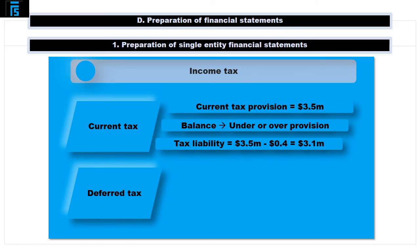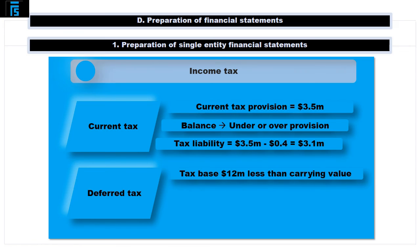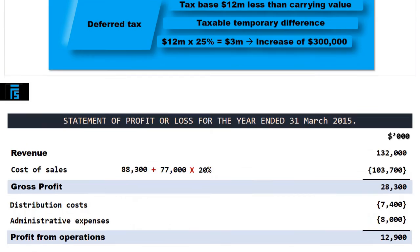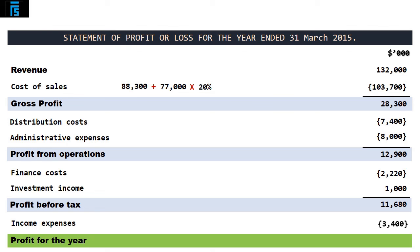Moving on to the deferred tax component. Note 5 states that as at the 31st of March 2015, the tax base of Clarion's net assets was $12 million less than their carrying amounts, implying a taxable temporary difference which, if we apply the 25% tax rate provided, generates the need for a deferred tax liability of $3,000. The current level of deferred tax liability as shown in the trial balance is $2,700, giving rise to an expense of $300, making the overall income tax expense equal to $3,400 and the profit for the year $8,280.